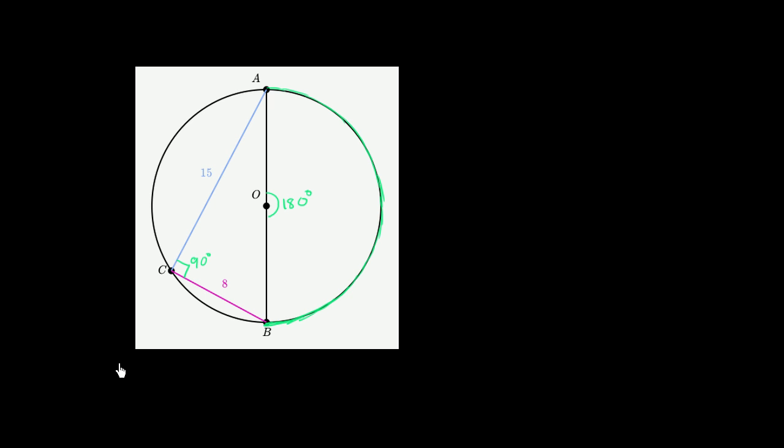Another way of thinking about it, it's going to be a right angle. And what that does for us is it tells us that triangle ACB is a right triangle. This is a right triangle, and the diameter is its hypotenuse. So we can just apply the Pythagorean theorem here.